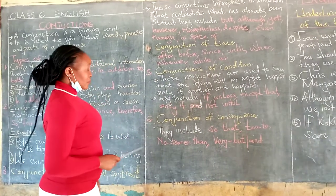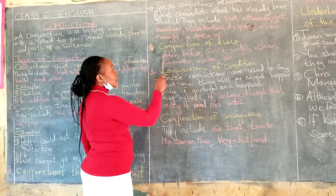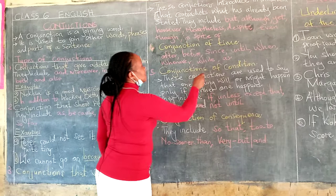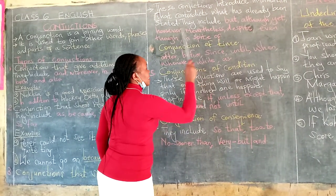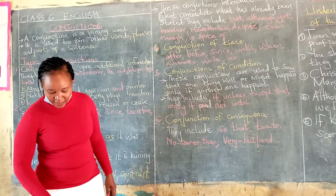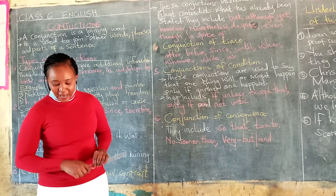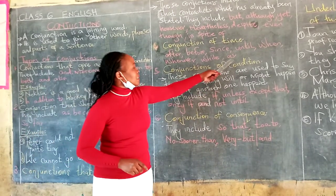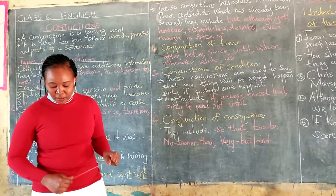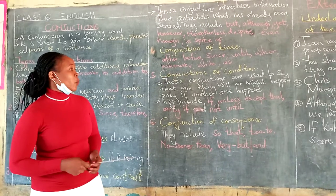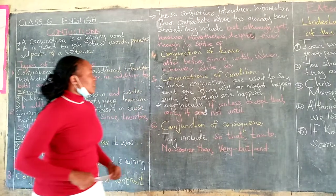We have number four: conjunctions of time. They include: after, before, since, until, when, whenever, while, and as. Listen to my sentences. Clap your hands as you sing — so the word 'as', as you have seen, is a conjunction. She must wait until tomorrow — so we have 'until' as the conjunction. Those are the conjunctions of time.